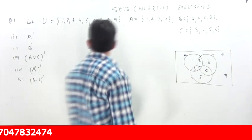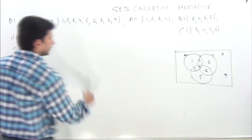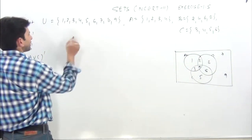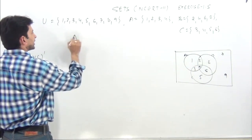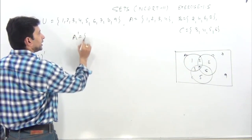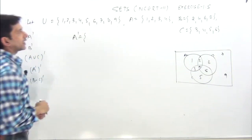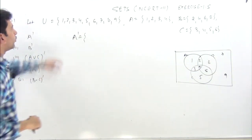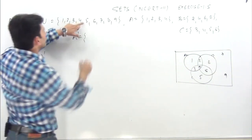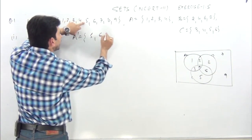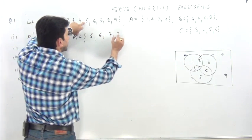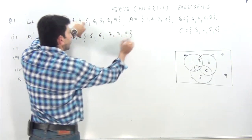Question number 1 — yeh Venn diagram se bhi kar sakte the. A complement: A mein kya hai {1, 2, 3, 4}, to 1, 2, 3, 4 ke alawa jo hoga wo A complement hoga: {5, 6, 7, 8, 9}.